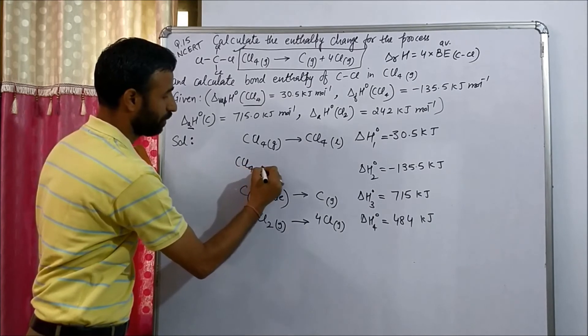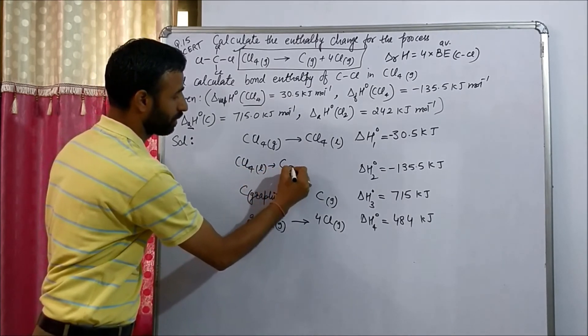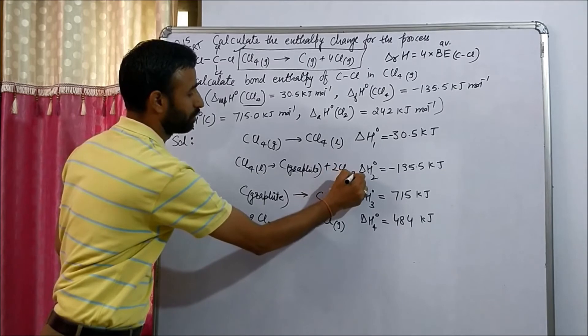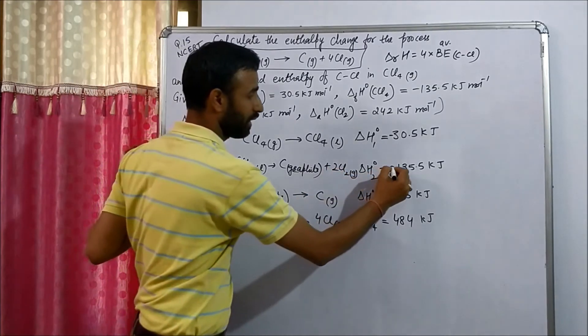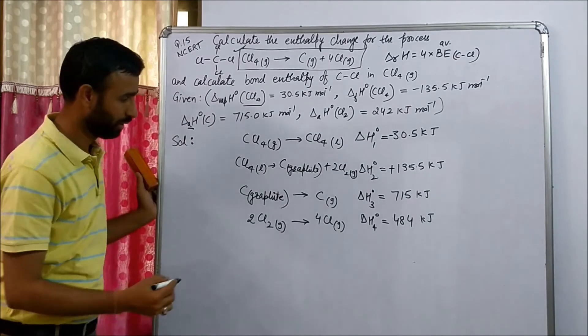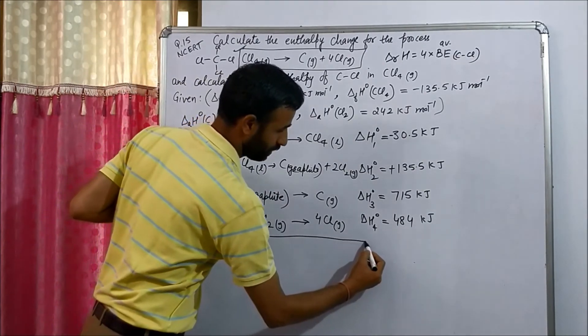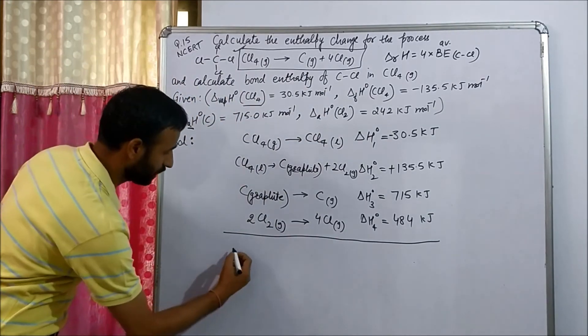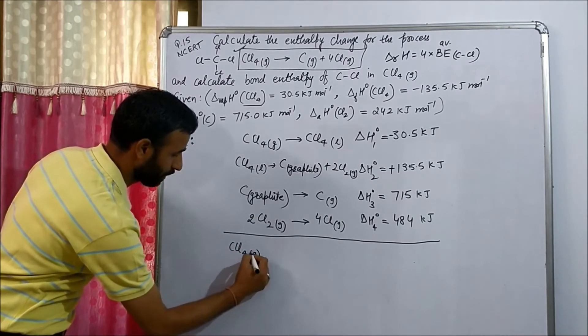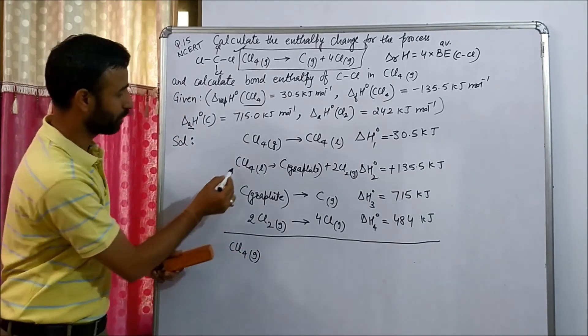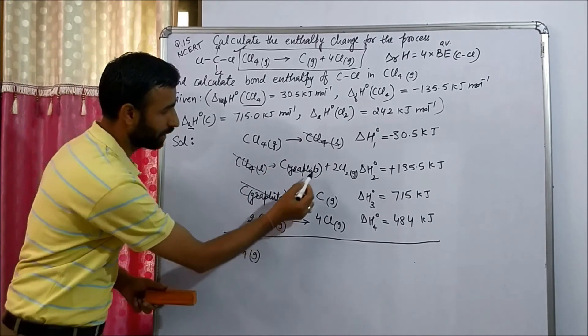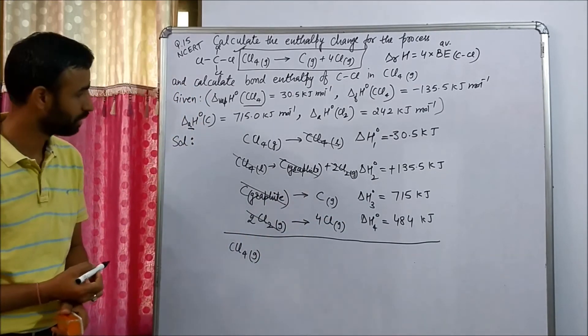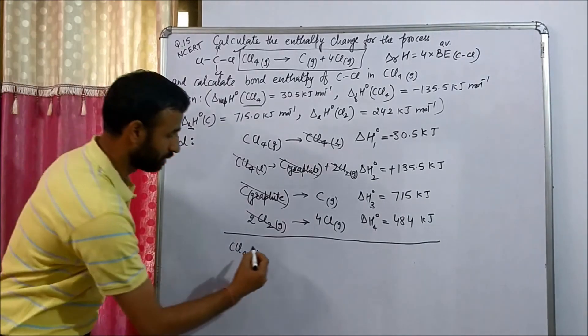So if we reverse this equation, it is CCl4 liquid to carbon graphite plus 2 Cl2 gas. And sign plus 135.5. In this way, if we add now, see CCl4 gas, CCl4 liquid cancel, carbon graphite cancel, 2 Cl2 gas cancel.